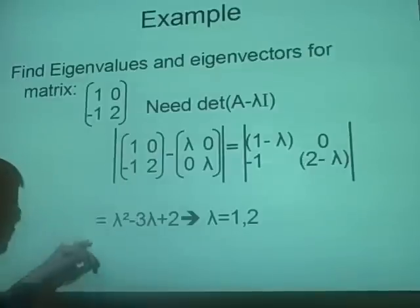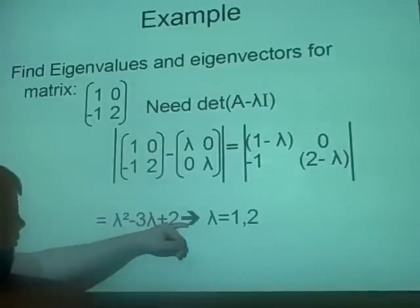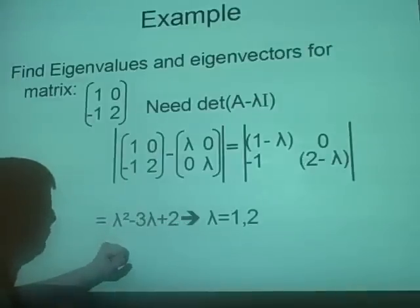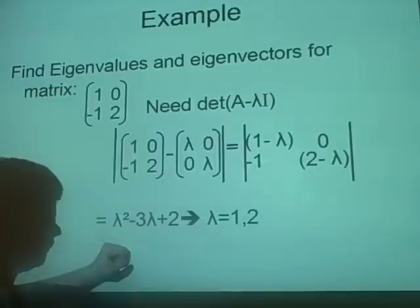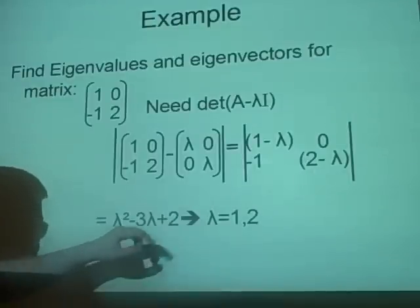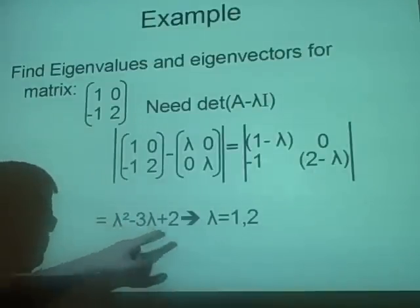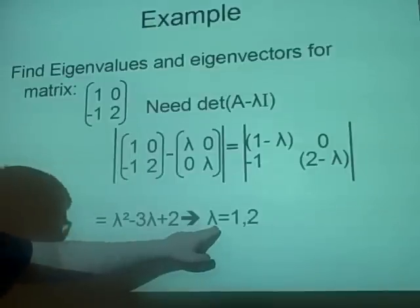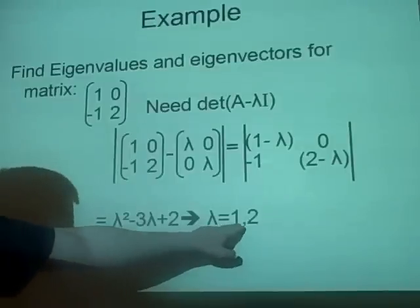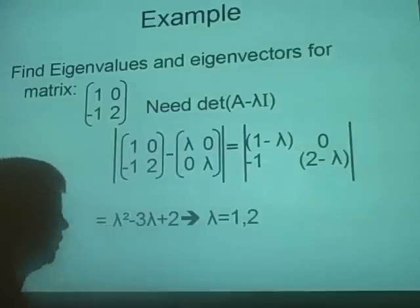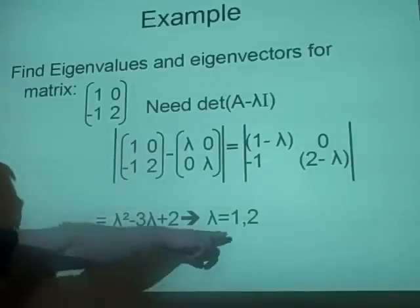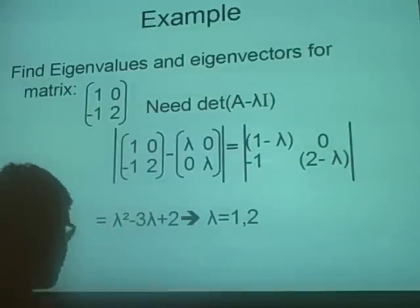Finding the determinant of that matrix gives us an expression, which we then factorize to get the values for lambda: lambda equals 1 and lambda equals 2. These are our eigenvalues.